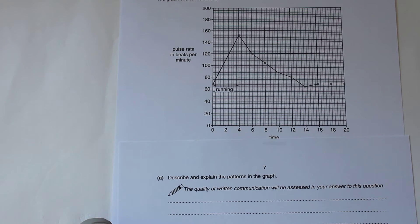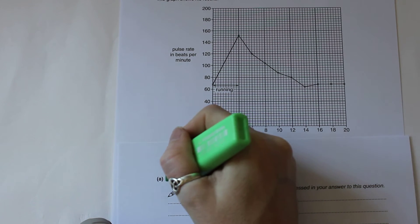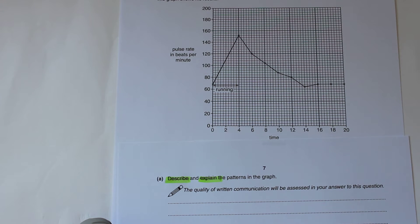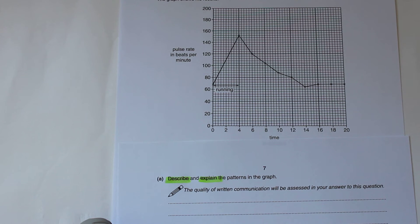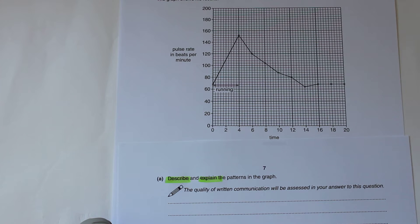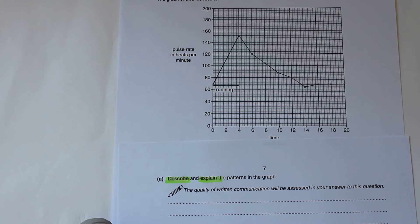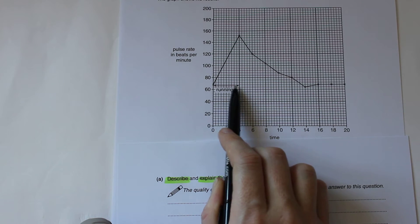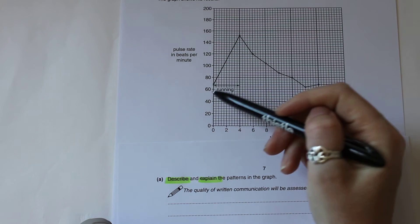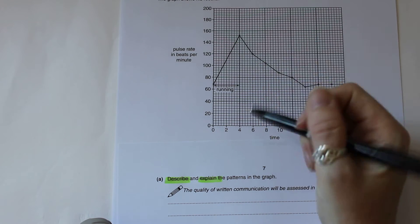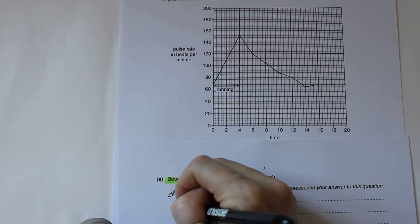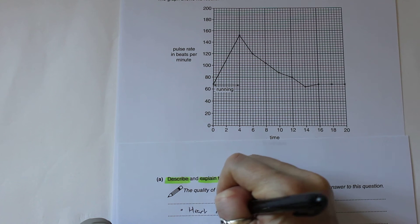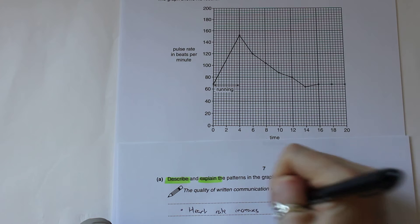As always we pick out the two things to do. The first one is describing, the second one is explaining. When we look at the graph first of all, we're going to start with the describe. The first thing we can see is they've marked on the graph when he's exercising, and during his exercise the pulse rate is increasing. So our first point is that the heart rate increases during exercise.